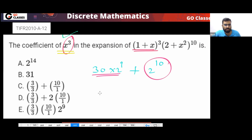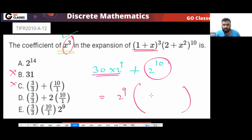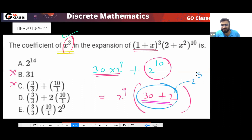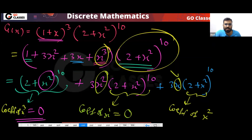Now check the options. Taking 2⁹ common: 2⁹(30 + 2) = 2⁹ × 32 = 2⁹ × 2⁵ = 2¹⁴. So the final answer is 2¹⁴. This is your TIFR 2010 question — very simple, right?